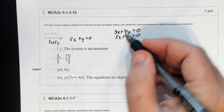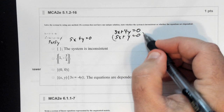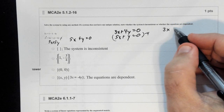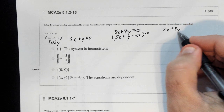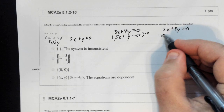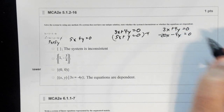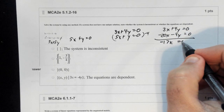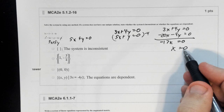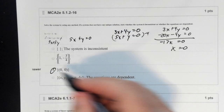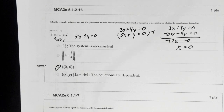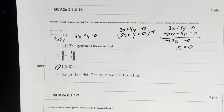If we multiply by negative 4, we have 3x plus 4y equals 0 and negative 20x minus 4y equals 0. That gives negative 17x equals 0, so x is 0. Plugging back in, you get (0, 0).